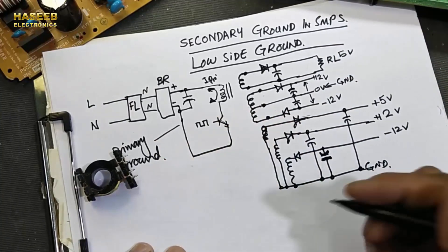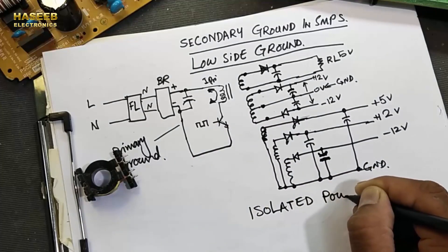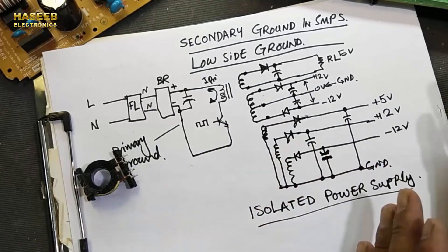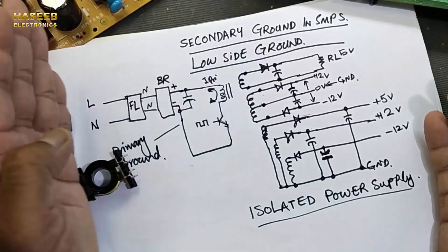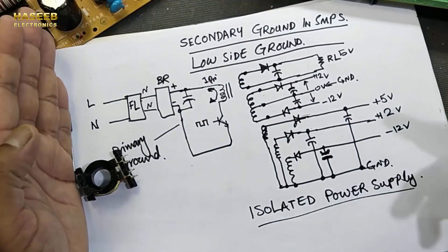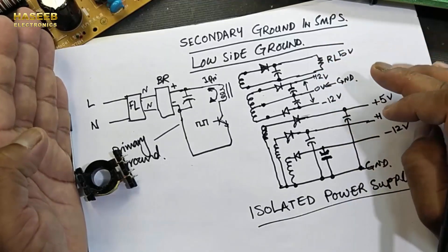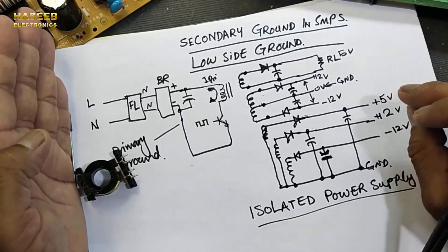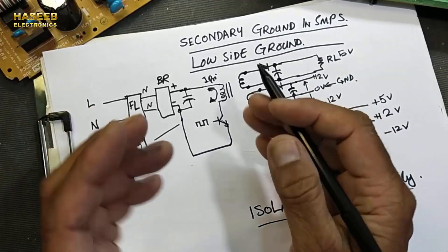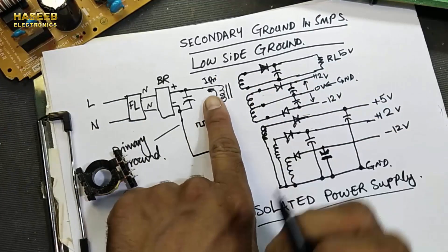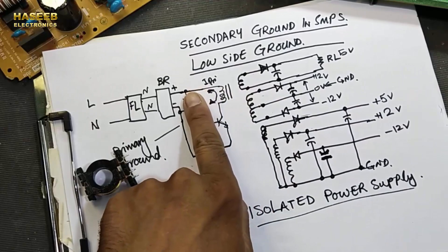This secondary ground has no concern with the primary ground — it is an isolated output, an isolated power supply. The isolation means it is isolated from the line voltage. If anyone touches this voltage, they will not receive an electrical shock because there is no physical electrical connection with the primary side.